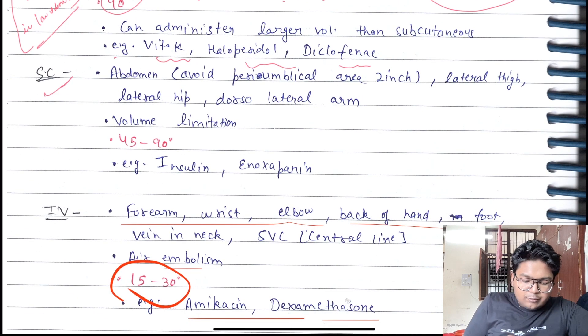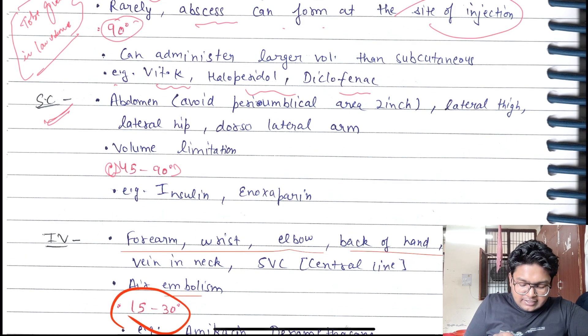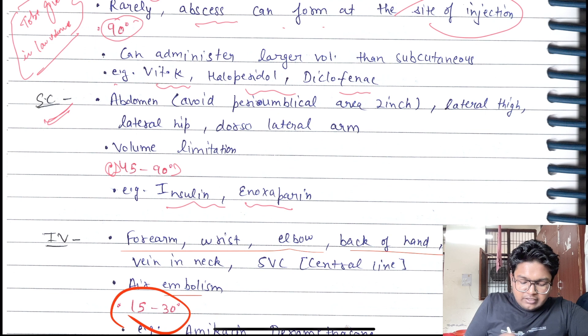Then subcutaneous injection. They are given at 45 to 90 degrees. Example: insulin and enoxaparin. Volume limitation is always there.